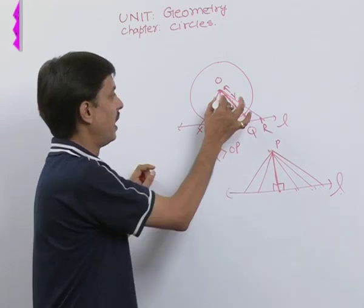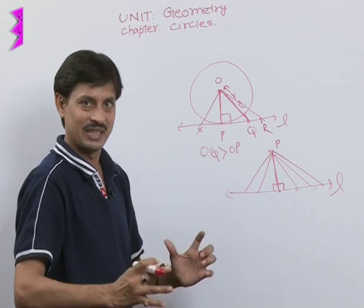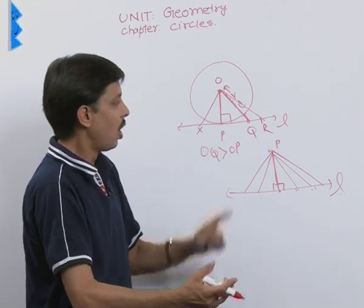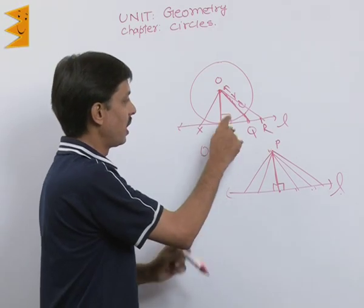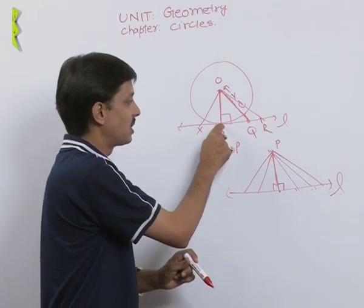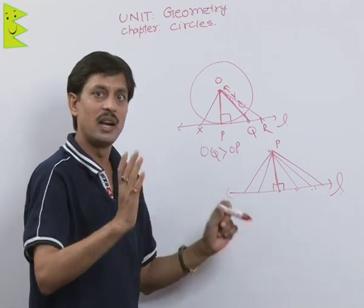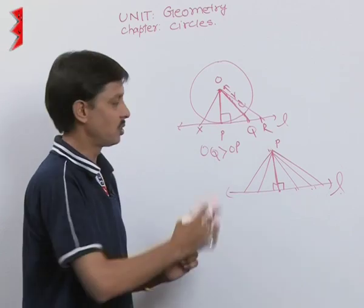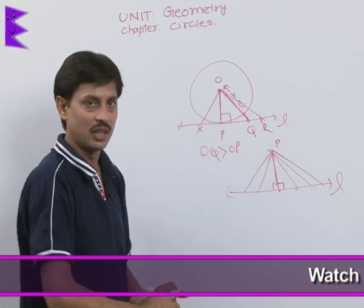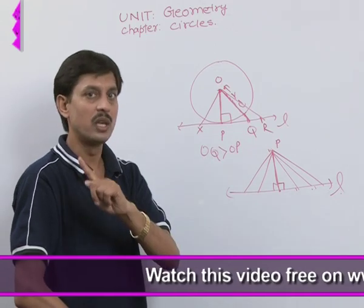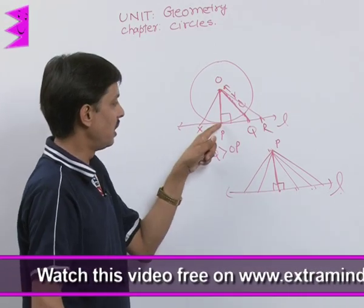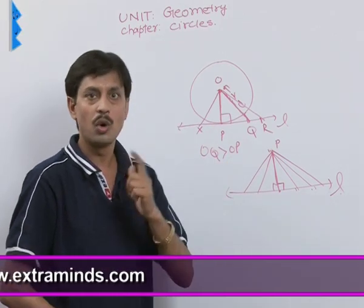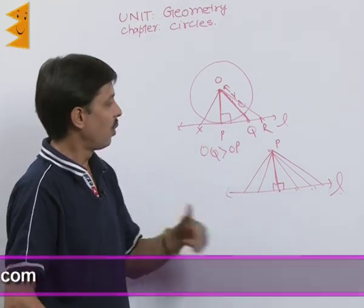If OP is the shortest length, because it equals the radius while any other point joined to the center is more than the radius, then OP is perpendicular. Hence we can conclude that the radius is always perpendicular to the tangent to the circle at the contact point.